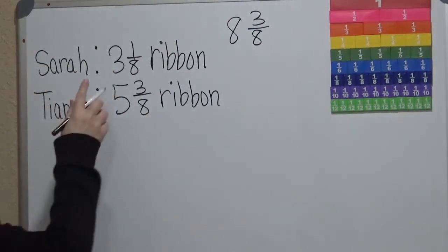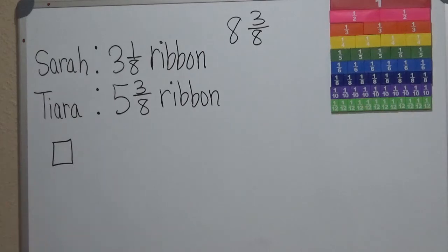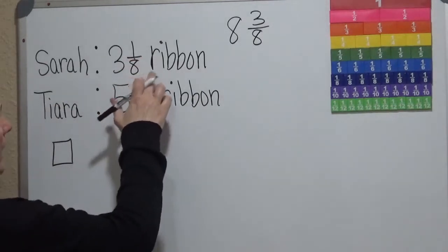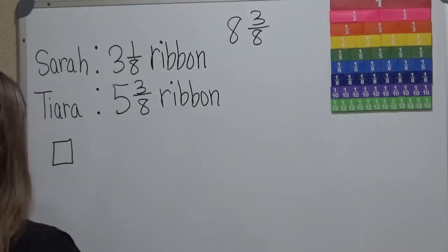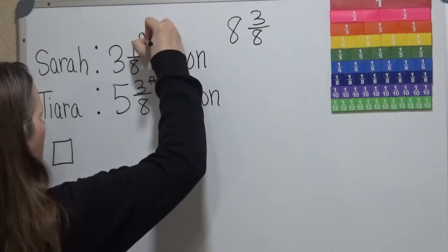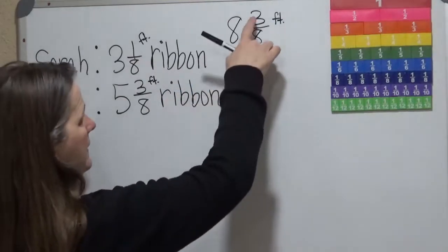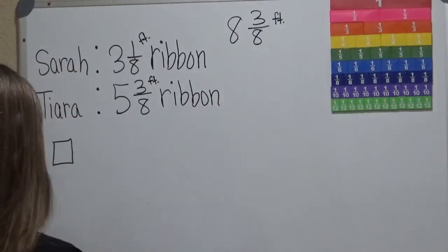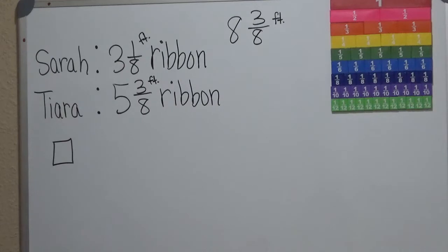So we're going to use models. The problem is: Sarah and Tierra have some ribbon. Sarah has 3 whole and 1 eighth feet of ribbon, and Tierra has 5 and 3 eighths feet of ribbon. Their goal is to get to 8 and 3 eighths feet for their project. We're trying to find out if they have enough to do their project, so I'm going to start on the model.